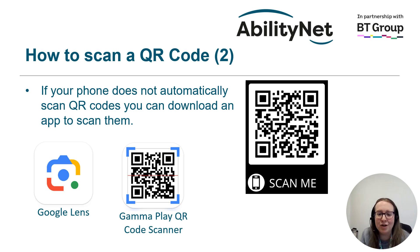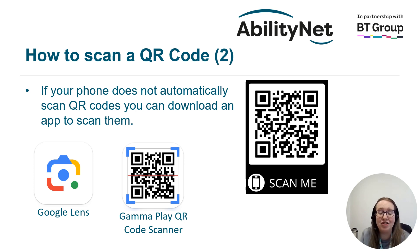If you've opened up the camera on your phone and it is not scanning QR codes automatically, this might be because you have a slightly older phone or operating system. What you can do is download an app to help you scan QR codes. On the slide here we have the Google Lens app and the GammaPlay QR code scanner — these are just a few of many apps available. Open your Play Store or App Store and search for QR code scanners to find lots of options you can download.